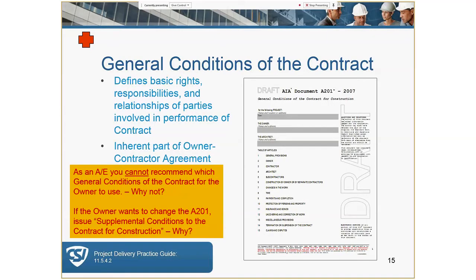The general conditions — the A-201 — defines basic rights, responsibilities, and relationships of the parties involved in the performance of the contract. We're going to touch on owner responsibilities, architect and engineer responsibilities, and contractor responsibilities. It's a document that tries to tie in everyone's responsibilities so the team can work as efficiently as possible throughout the actual construction project. As an architect, you cannot recommend which general conditions to use because that would be practicing law.